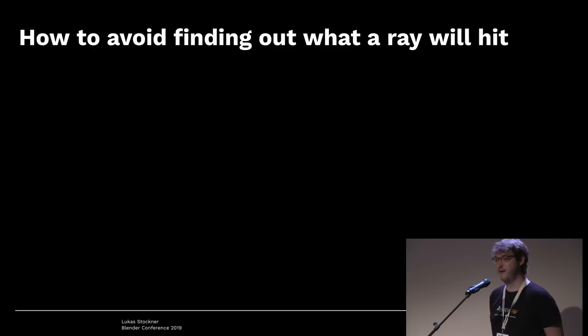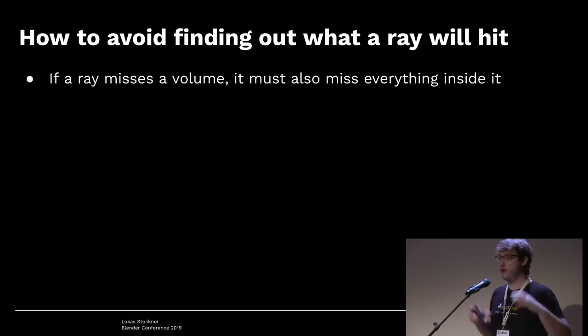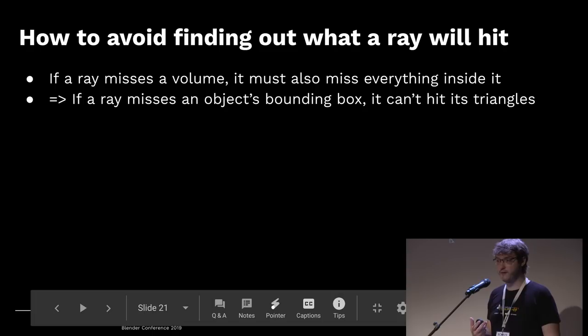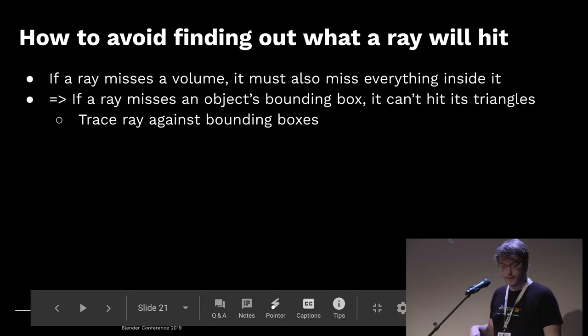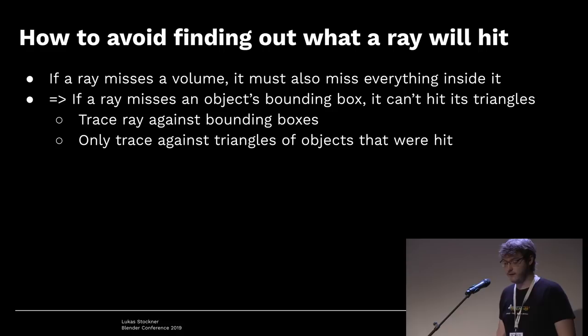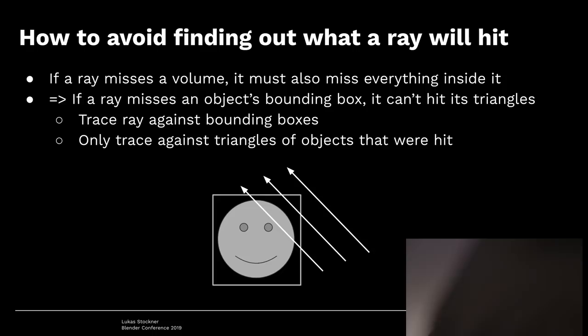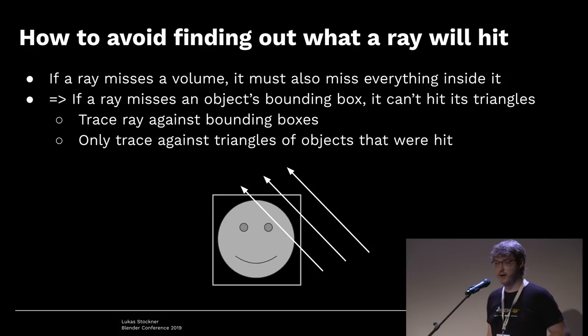The idea is: if a ray completely misses a volume in space, it also can't hit anything inside it. So we first test against a bounding volume, and if we miss it we skip the entire object. For example, we use the bounding box of an object. If the ray misses the bounding box, skip it. If it hits the bounding box, test against the object itself. Sometimes we test the box, think we might hit it, test the object, and find we didn't — but in practice most rays won't hit a small object.